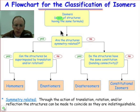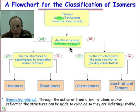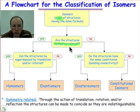The first question we ask is: are they symmetry related? What do we mean by that? We mean, is there any operation — a translation, a rotation, a reflection — any operation that we can do to one structure to make it superimpose bond for bond, atom for atom on the other structure?